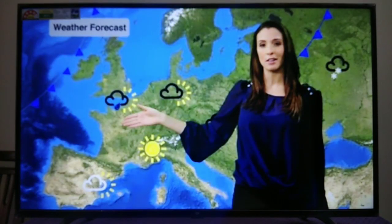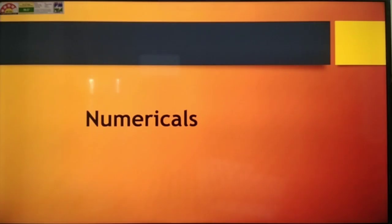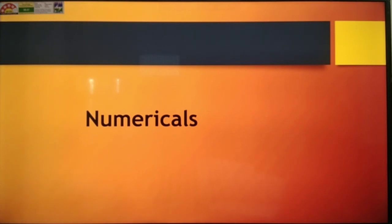Generally, great circles are used by meteorologists to determine the climate and weather conditions in a region. As we have already studied, all the clocks of the world are set according to the prime meridian — either they are ahead or behind it. So there are some numericals to calculate the time at different longitudes that we are going to learn today.